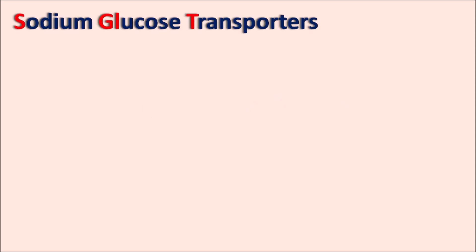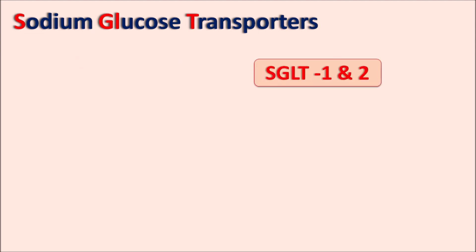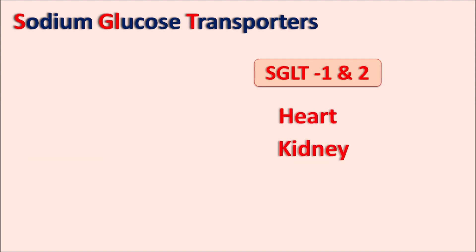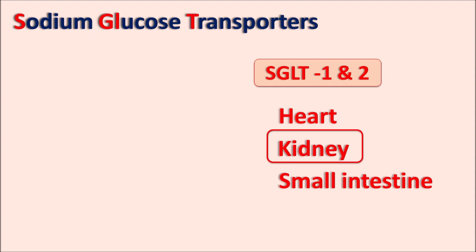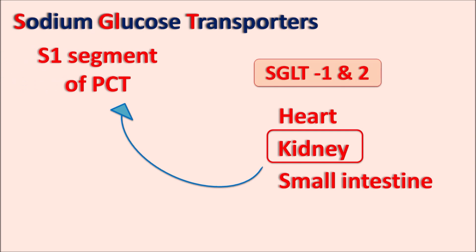Dapagliflozin acts on sodium glucose transporters, which are of different types. SGLT1 and SGLT2 are present at different locations — on the heart, kidney, and small intestine. Among these, Dapagliflozin acts on SGLT2 receptors present on the kidney. Within the nephron, the S1 segment of the proximal convoluted tubule is abundant with SGLT2 receptors.